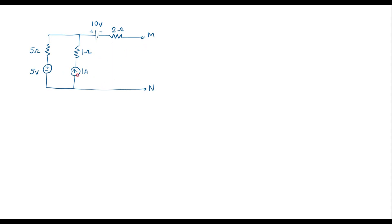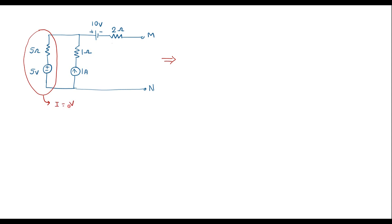Here we have a current source of 1 amp, and in series with that there is a 1 ohm resistor. Here we can see a 5 ohm resistor is in series with a voltage source. I will convert this voltage source and 5 ohm resistor, which are in series, into a current source. To convert this, we apply I = V/R, that is Ohm's law.